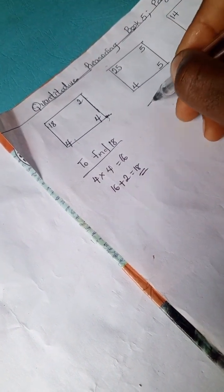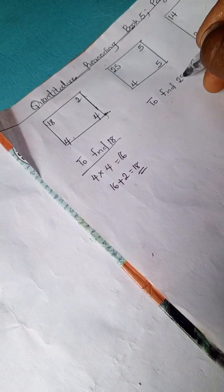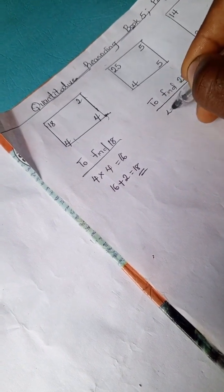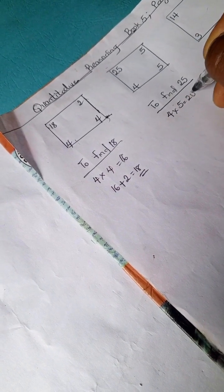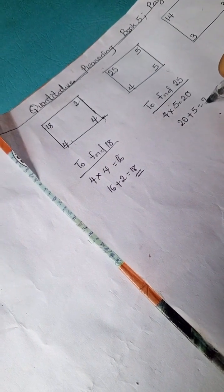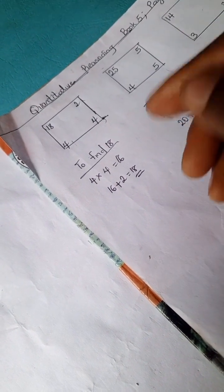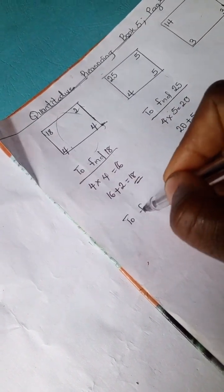We can actually apply the same here to find 25. If 4 times 5 is 20, and 20 plus 5 is 25. So as you can see it worked, right? So we can go ahead to calculate the other numbers.